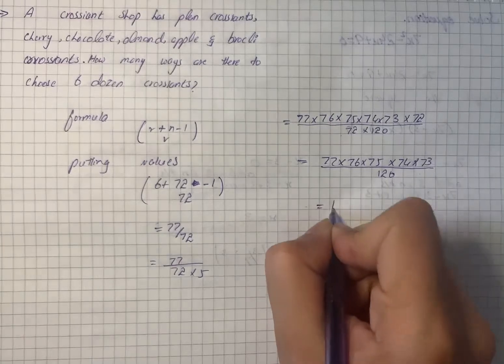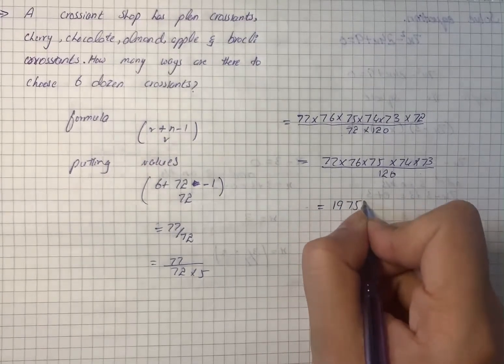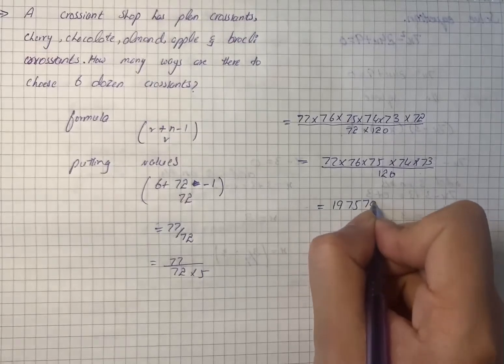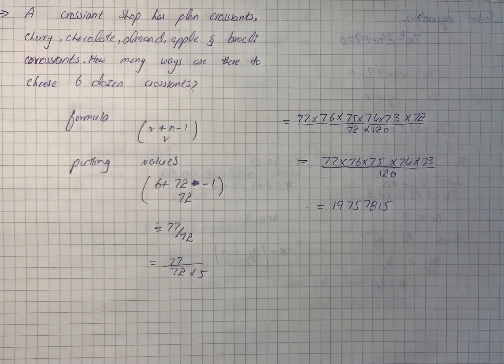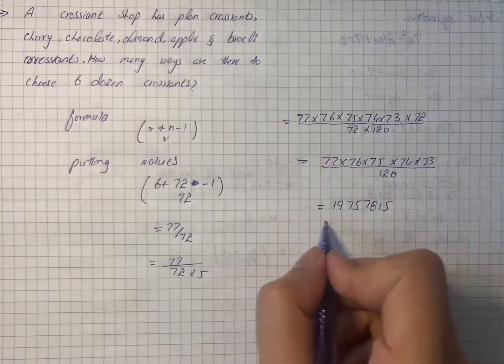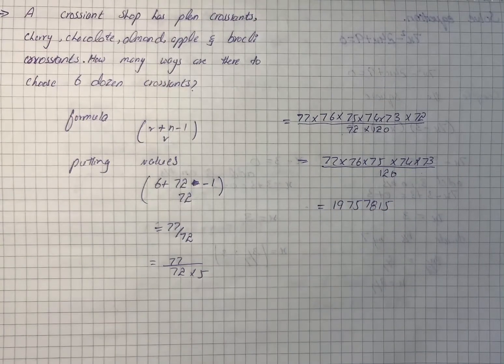On calculation, it will give us 197,578,815. That is our final answer. So this many number of ways are available to choose six dozen croissants.